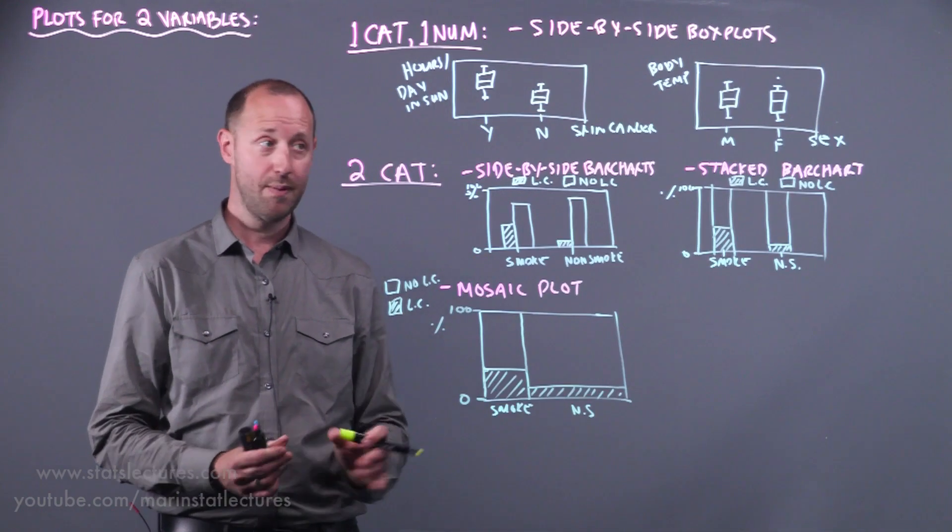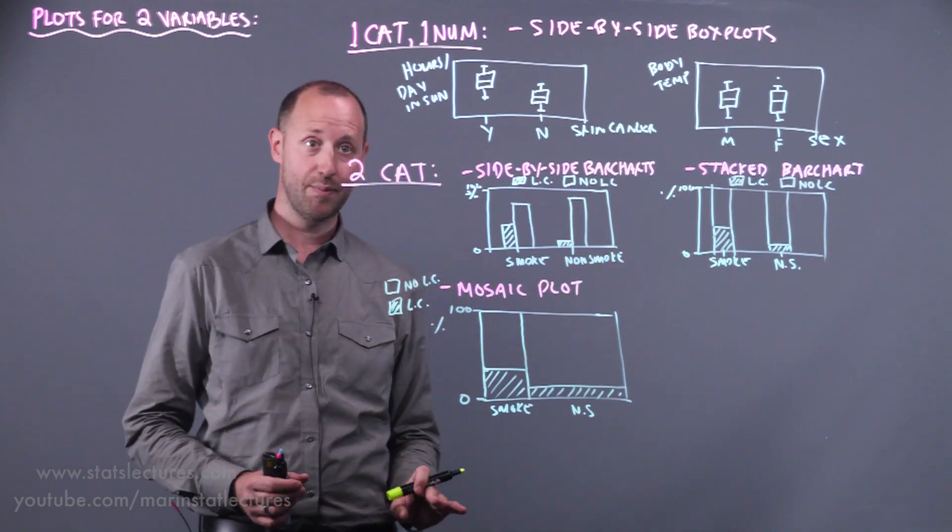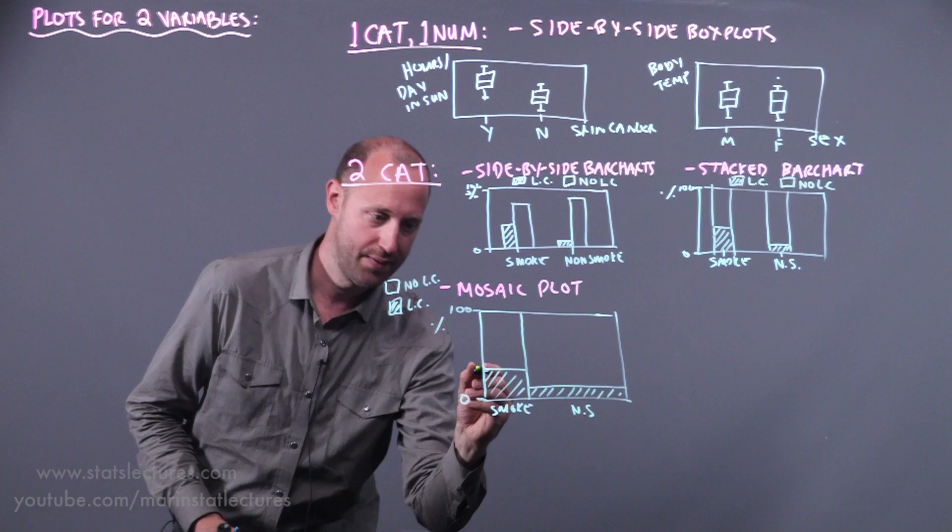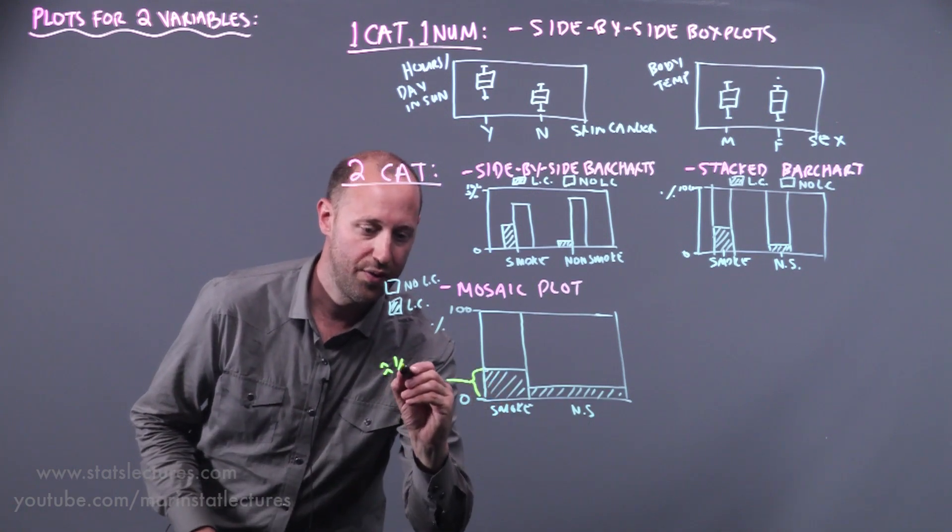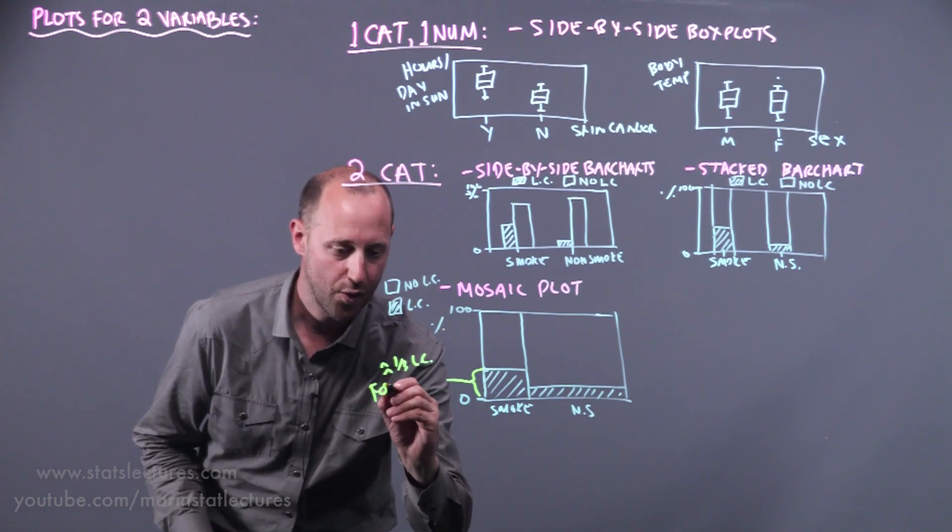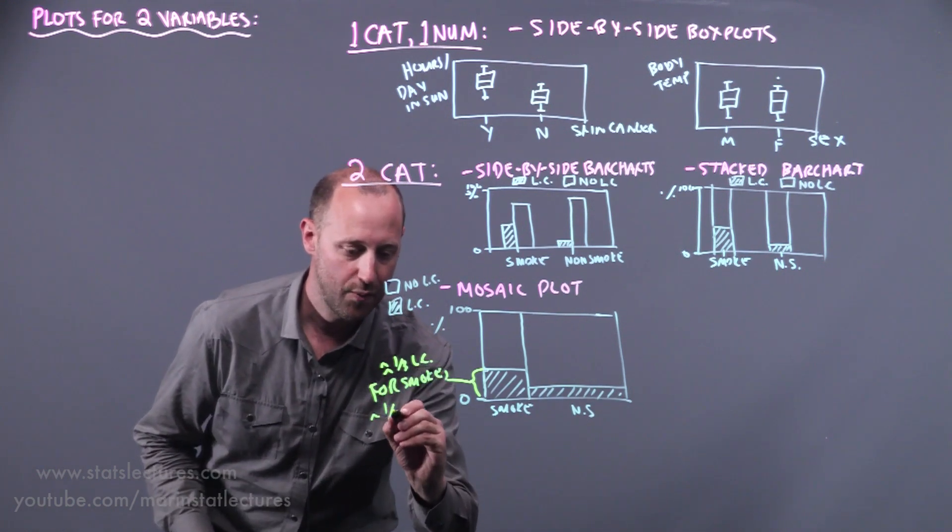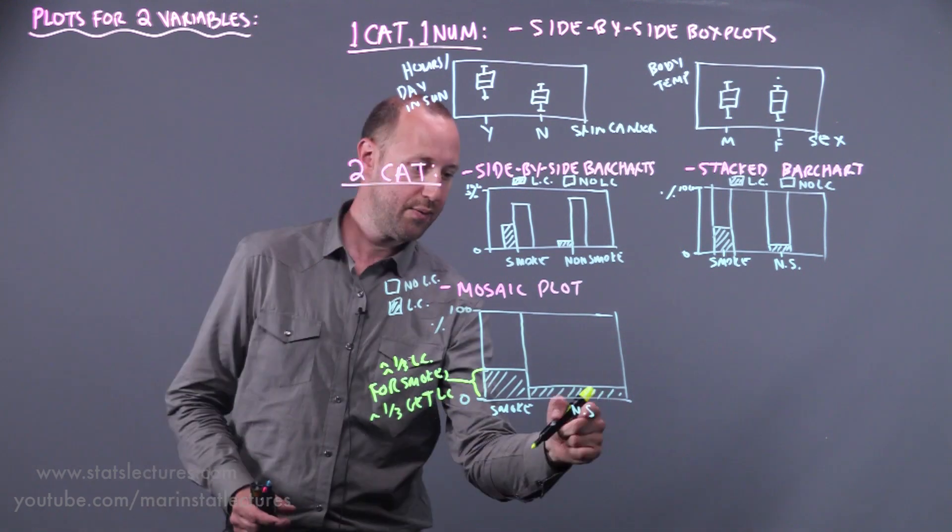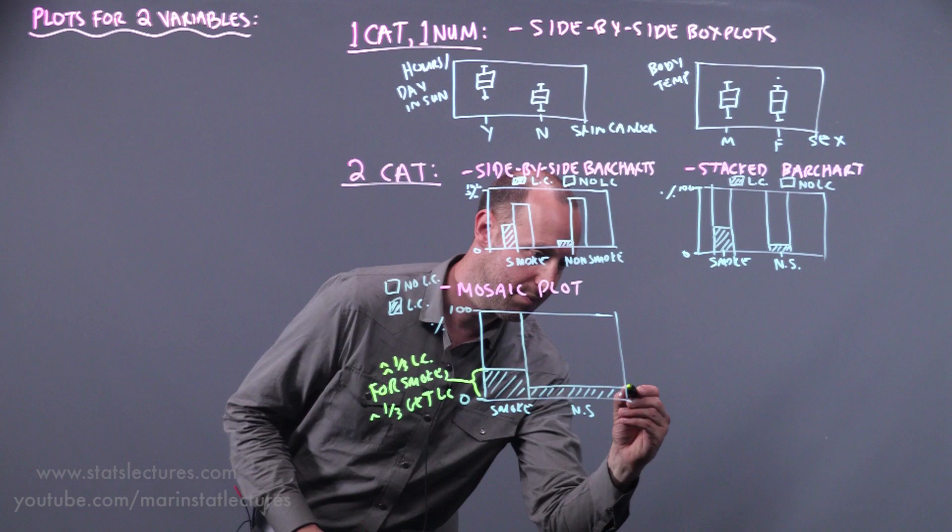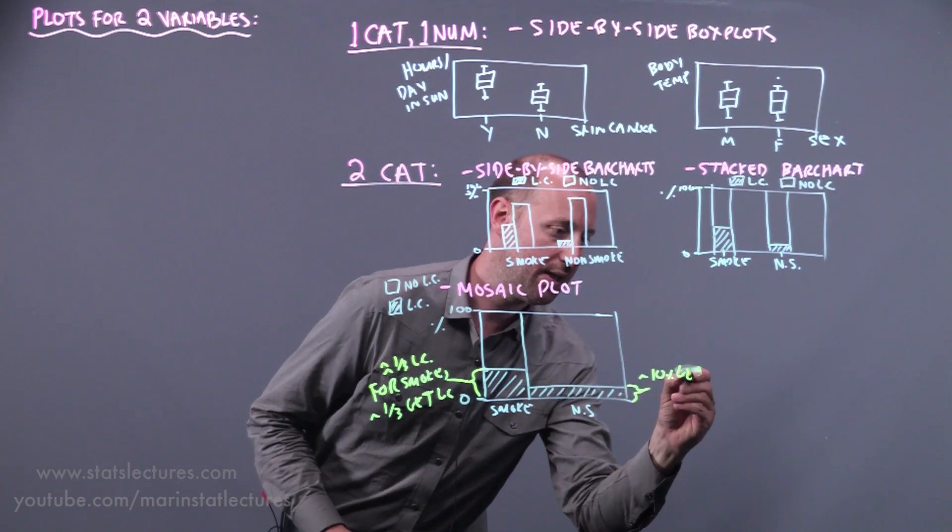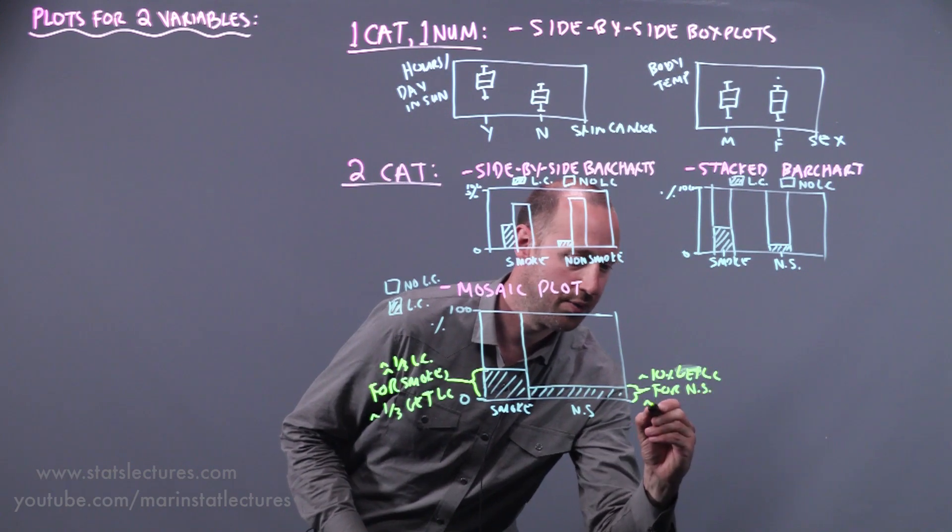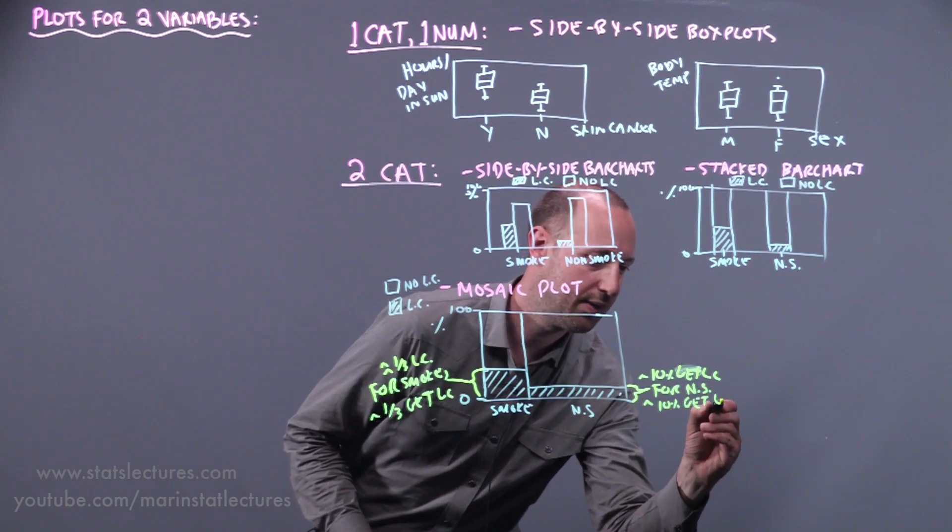So this plot shows pretty much what we saw in that stacked bar chart. We can see for the group that smokes, we can see roughly one-third are getting lung cancer. In other words, for those who smoke, roughly one-third get lung cancer. And here we can see for those who do not smoke, so this total stack is 100%, roughly 10% are getting lung cancer. So again, for those who do not smoke, roughly 10% get lung cancer.